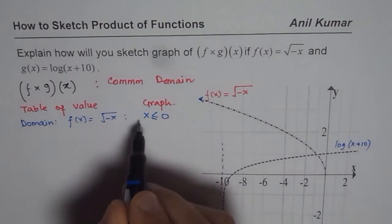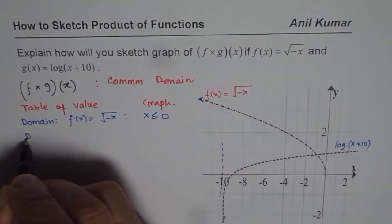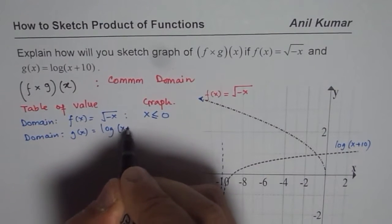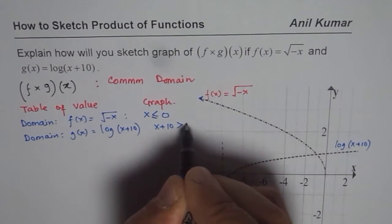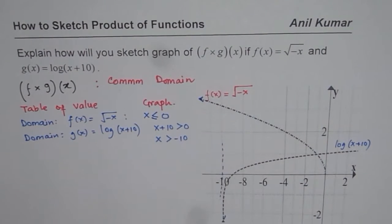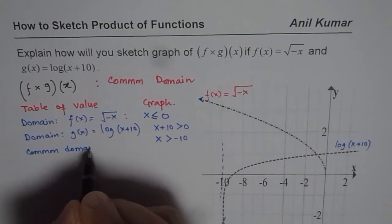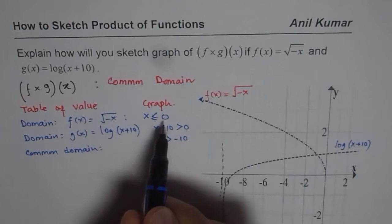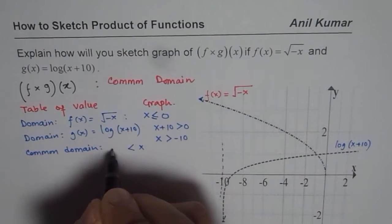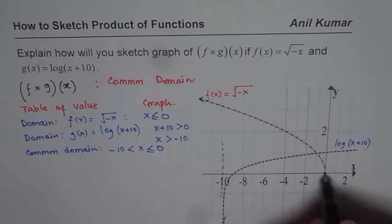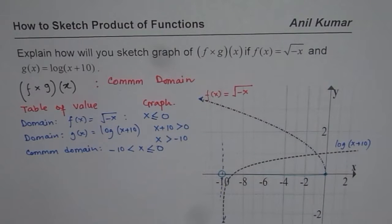So minus x should be greater than or equal to 0, meaning x is less than or equal to 0. For the domain of g of x, the function is log of x plus 10, and we need x plus 10 to be greater than 0, so x should be greater than minus 10. Therefore, the common domain is between minus 10 and 0, where 0 is included: x is greater than minus 10 and less than or equal to 0. That is the common domain over which we can sketch the graph of the product.